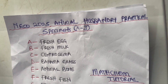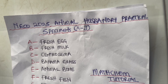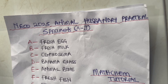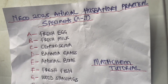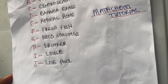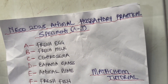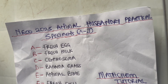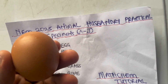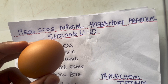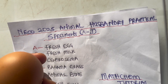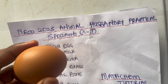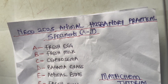In this video we'll be looking into NECO 2025 Animal Husbandry practical. These are the specimens from specimen A to specimen J. Specimen A is a fresh egg — you can also call it a poultry egg. I think everybody knows what a fresh egg is.